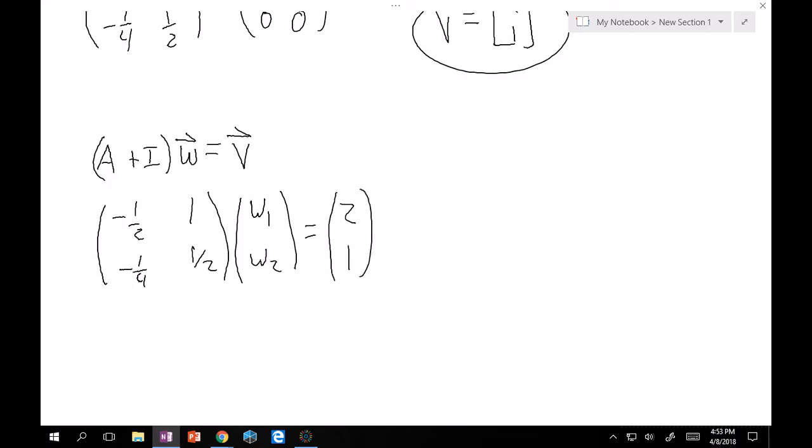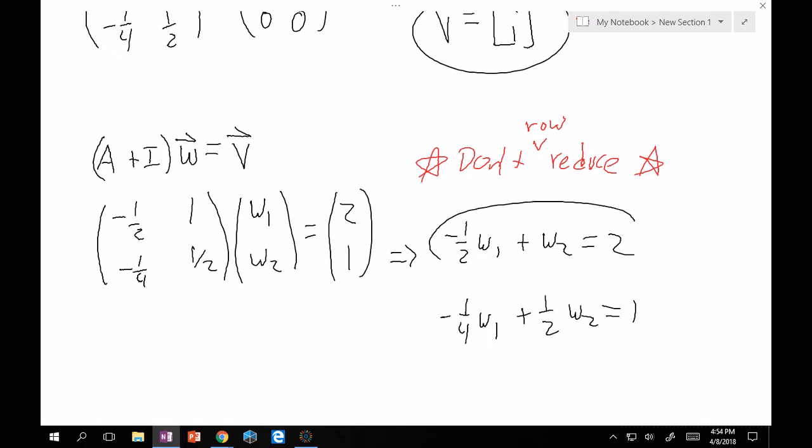Now, in this case, and here, I'll write this in red so you don't forget. Don't row reduce here because we're not solving something that's homogeneous anymore. We don't have 0 on the right-hand side anymore. So, if you row reduce it, you might not get the right answer. So, simply just don't row reduce and just see what happens here from this point forward. So, if we ask ourselves what happens here, this means minus 1 half W1 plus W2 has to equal 2 or minus 1 fourth W1 plus 1 half W2 has to equal 1. If you multiply the bottom equation by 2, you get the exact same equation out on top. So, you only have to deal with one of them, and I'll deal with this one here.